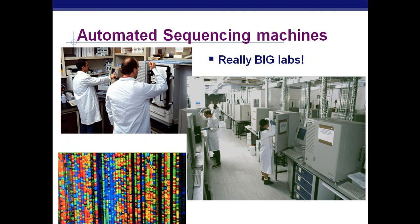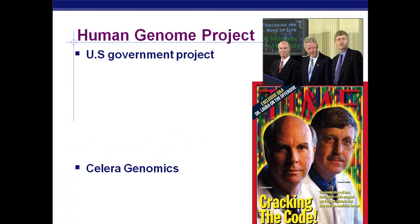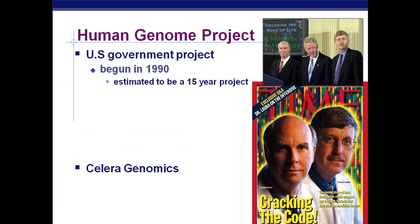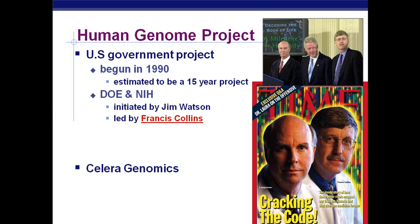Here you can see some automated sequencing machines in really big labs, with people doing this for a living. So let's take a look at the Human Genome Project. There are two major players: the U.S. Government Project and Celera Genomics, and they actually do work together. The work began in 1990 and was estimated to be about a 15-year project. It was initiated by the Department of Energy, headed by Ari Patrinos, and from the NIH — National Institutes of Health — led by Francis Collins.